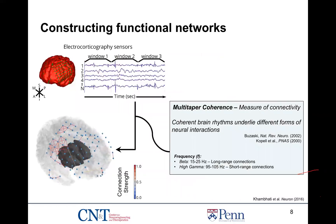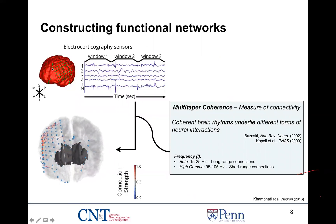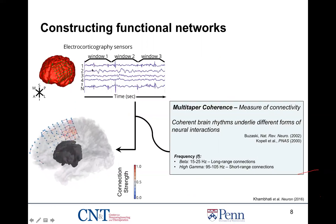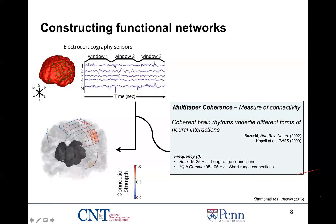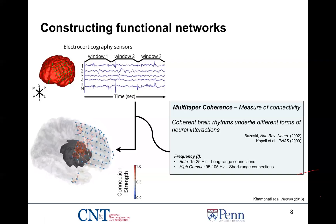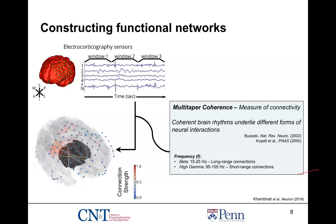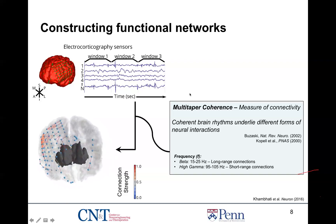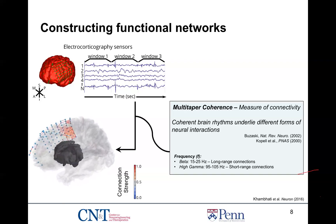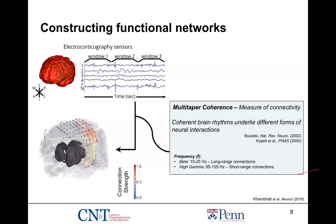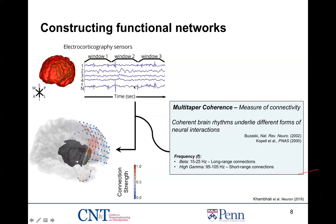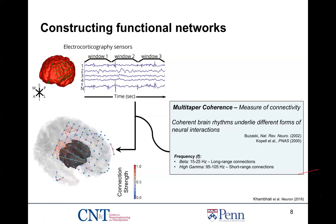Computationally, one way to construct functional networks is by examining the electric potential from each of these implanted sensors over time. We can bin them into individual time windows, and in each window, measure network connectivity based on the statistical similarity of the signal between each pair of signals. One popular and increasingly standard approach is to use a coherence-type measure, which gives some intuition of the underlying brain rhythms being expressed at individual regions. The coherence of these brain rhythms is thought to underlie different forms of neural interactions.